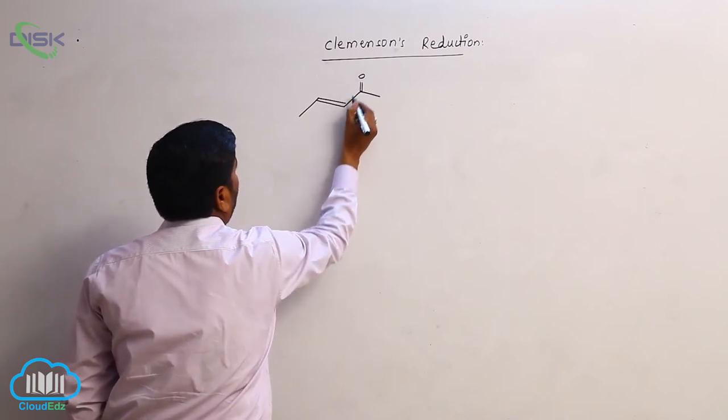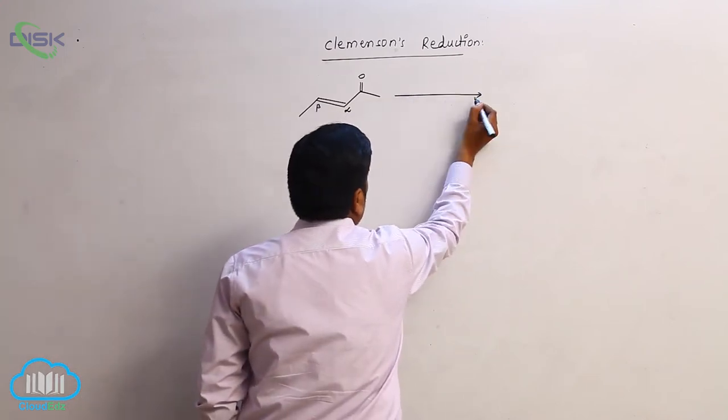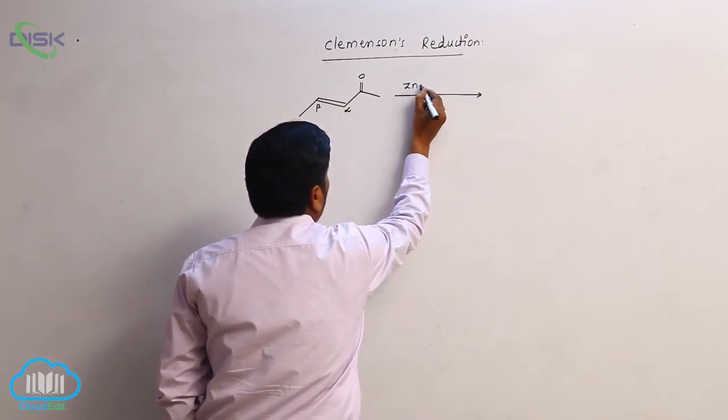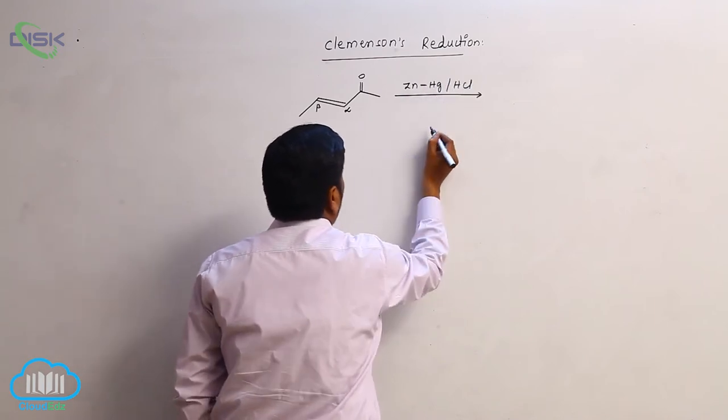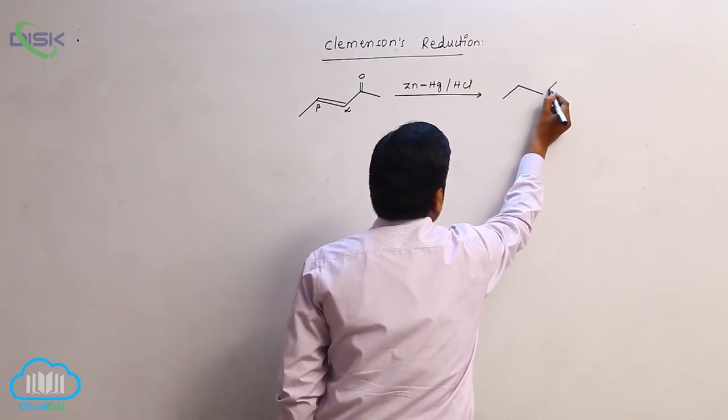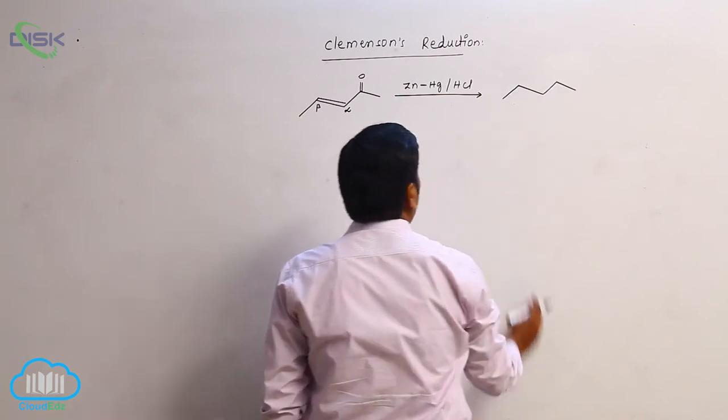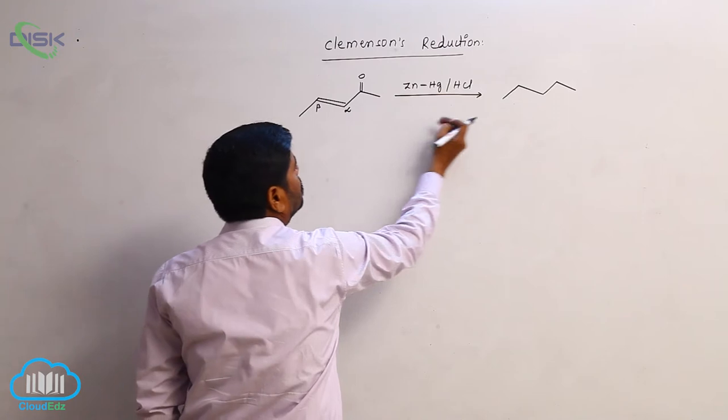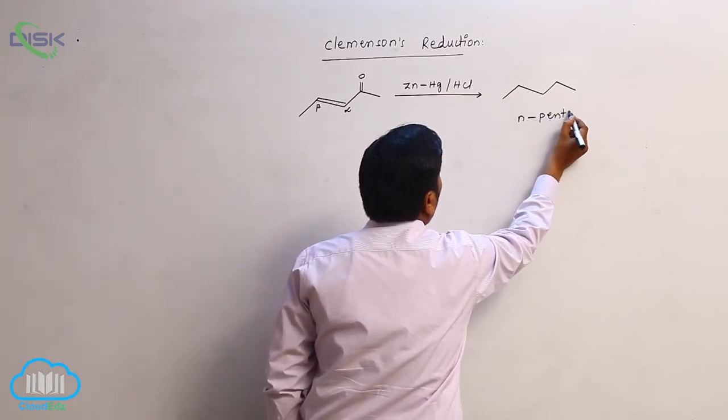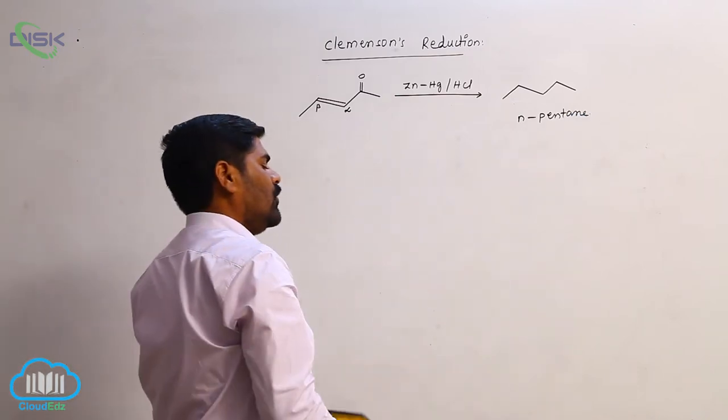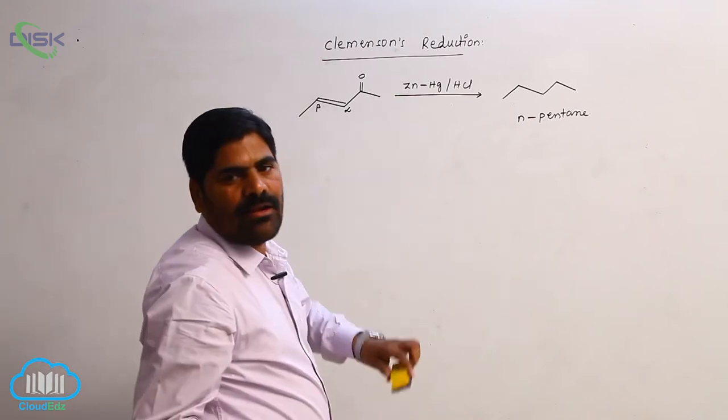Now this is a double bond, this is alpha, it is beta. While using zinc amalgam in presence of hydrochloric acid, it converts into 1, 2, 3, 4, 5 - so 5 carbons. This is n-pentane.